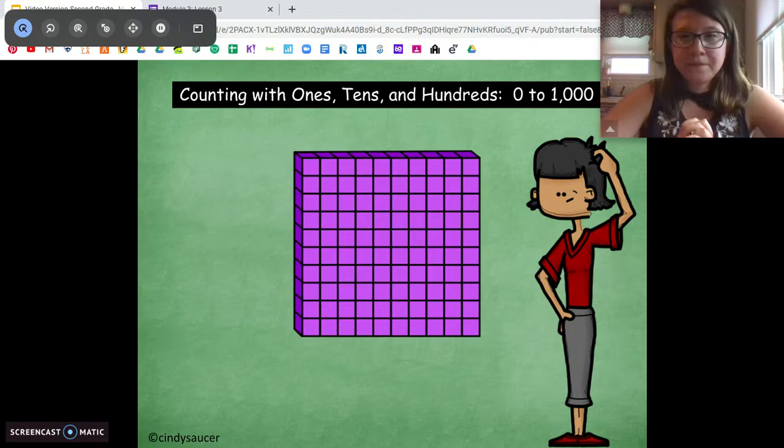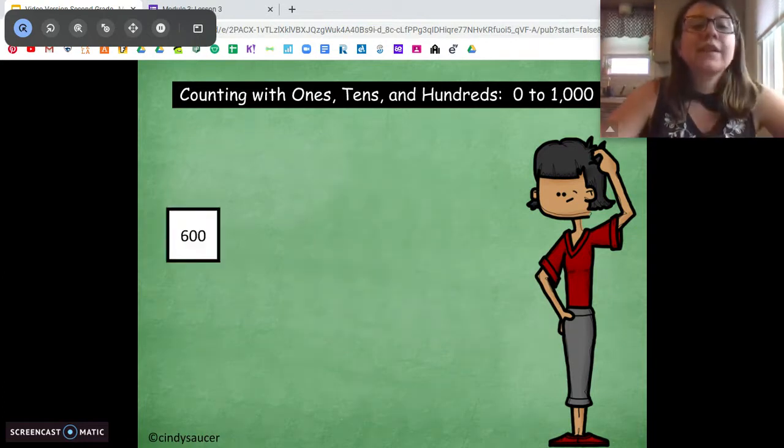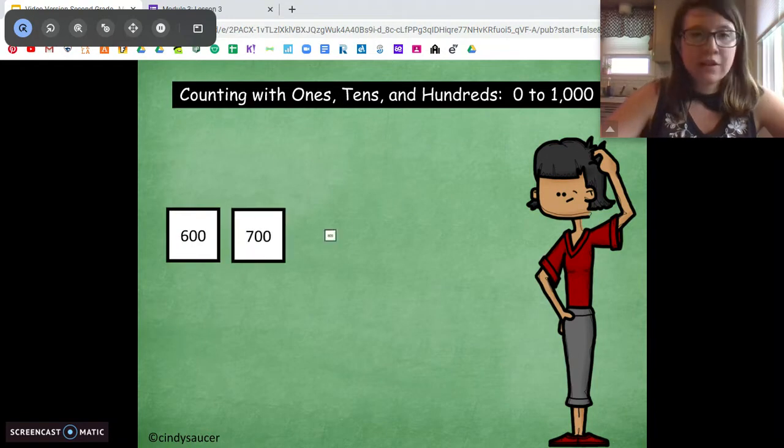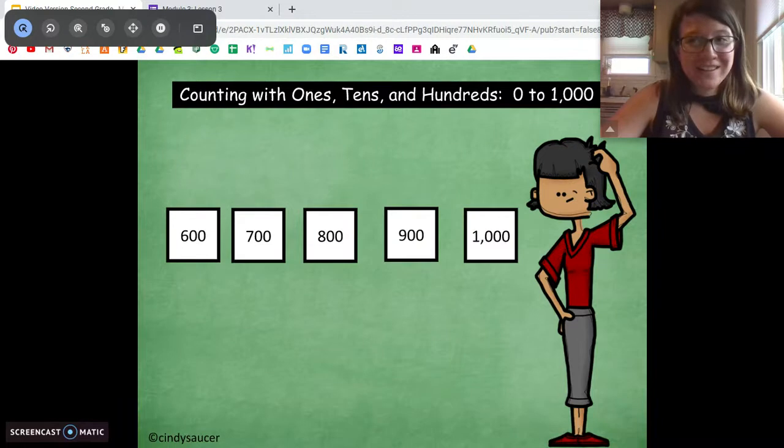Now what are we going to count by? Hundreds. Very good. We're going to start at 600. 600, 700, 800, 900, 1,000. Very good.